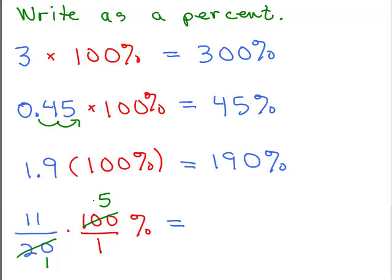So in the numerator I have 11 times 5, in the denominator I have 1 times 1. So I'm going to have 55 over 1, but any number over 1 is just the number in the numerator. So that'll be 55 percent. So there's a few more problems.